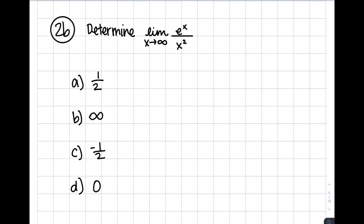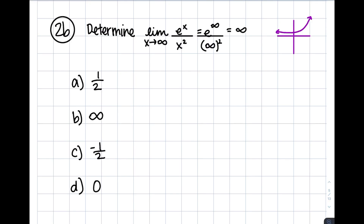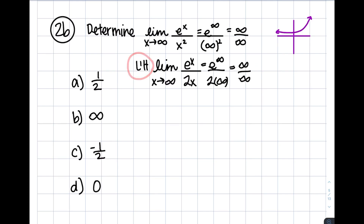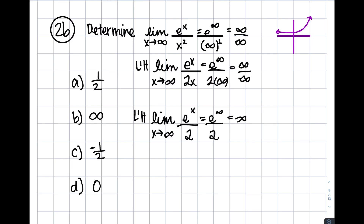How about you try question 2b? Quick review: in case you forgot what e to the infinity would be, we can graph e to the x. As we move towards positive infinity, our curve is forever increasing, meaning e to the infinity is infinity. When we have to apply L'Hôpital's multiple times, we take the derivative of the previous function we found. When we have infinity over a constant, that simply gives us infinity, so that is an acceptable answer. In this case, our answer will be B.